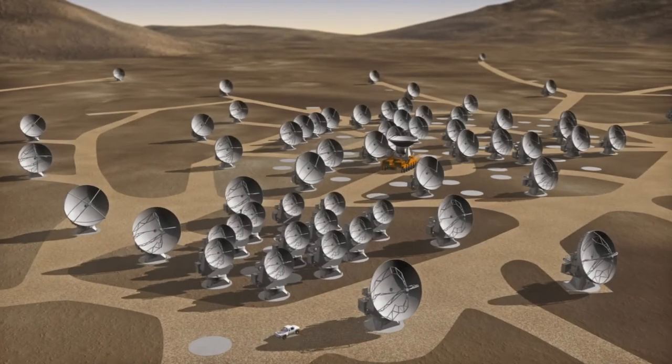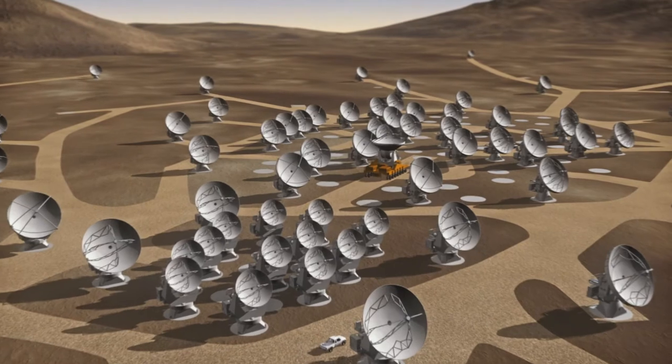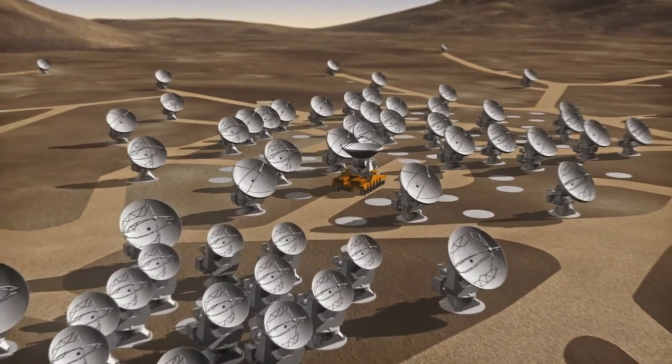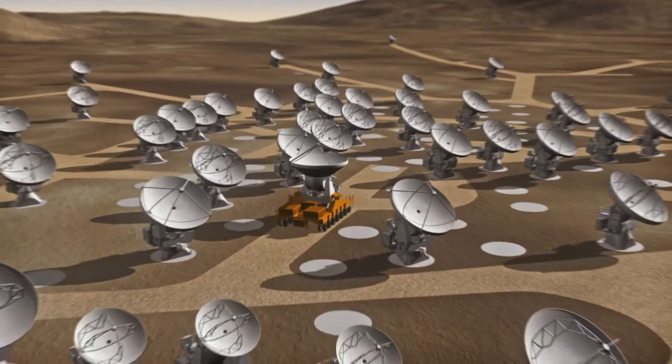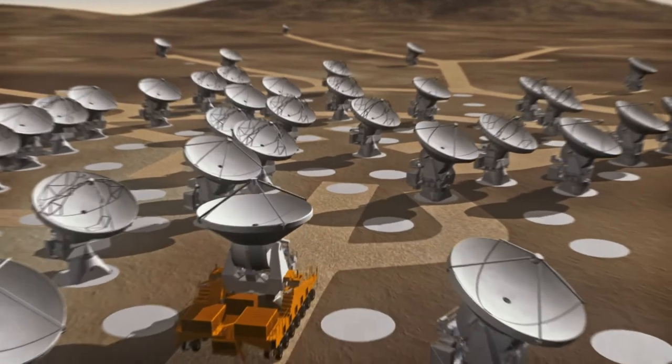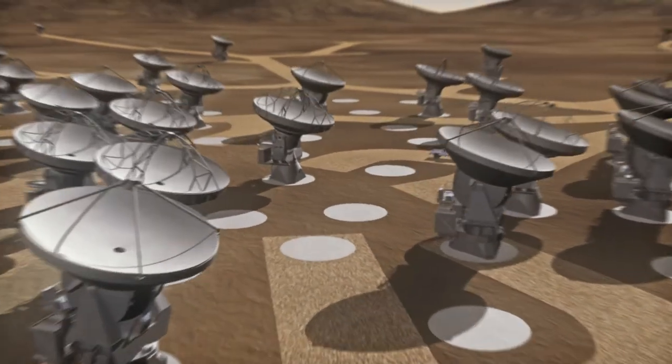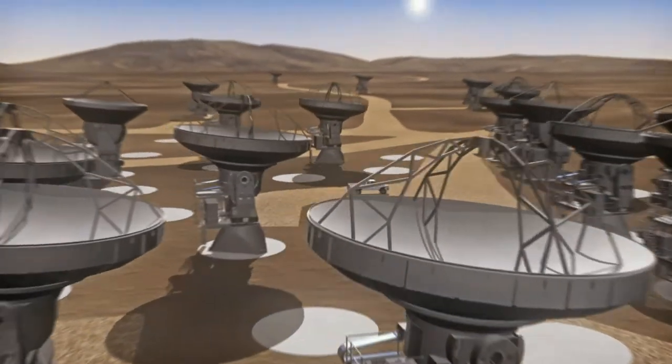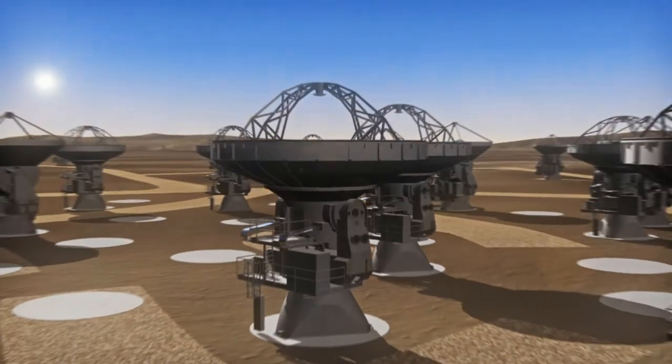64 antennas, each weighing 100 tons, will work in unison. Giant trucks will spread them out over an area as large as London to increase the detail of the image or bring them close together to provide a wider view. Each move will be made with millimeter precision.